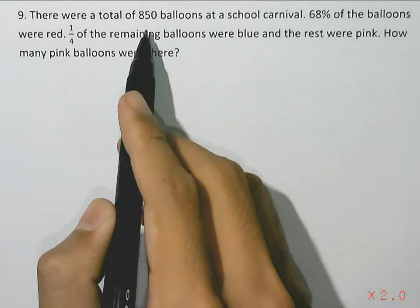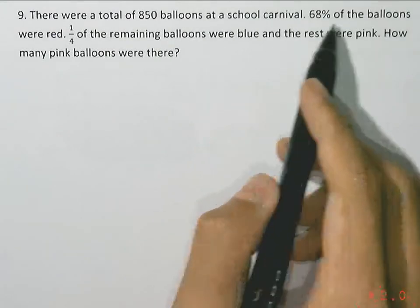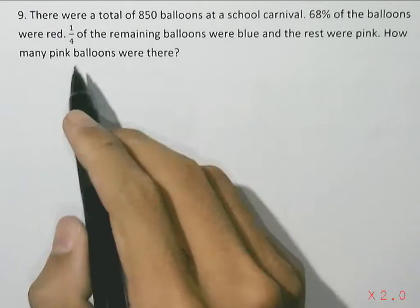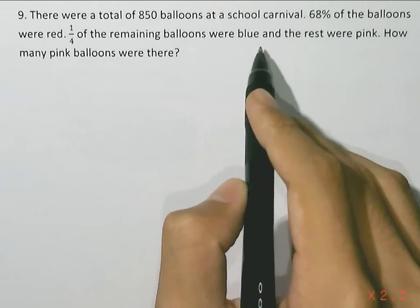So there were a total of 850 balloons at the school carnival. 68% of the balloons were red. So one quarter of the remaining balloons were blue and the rest were pink.